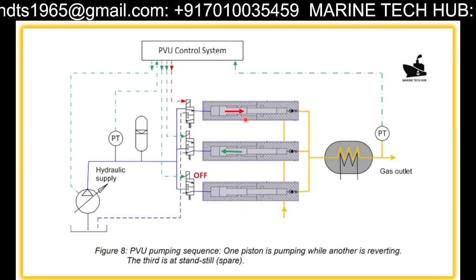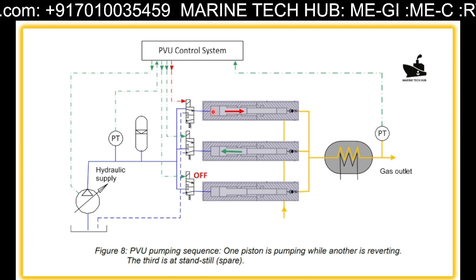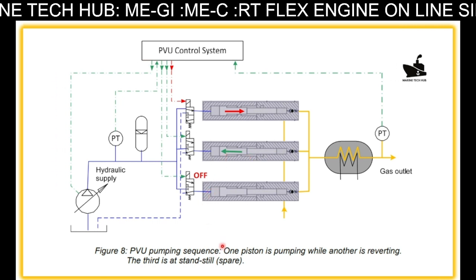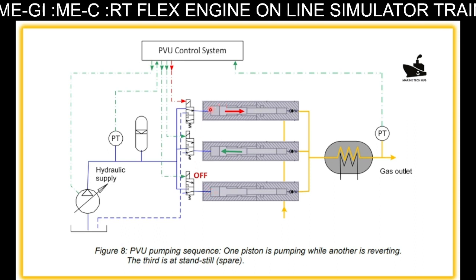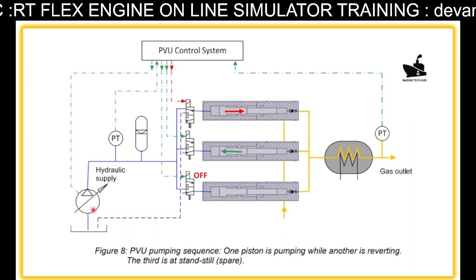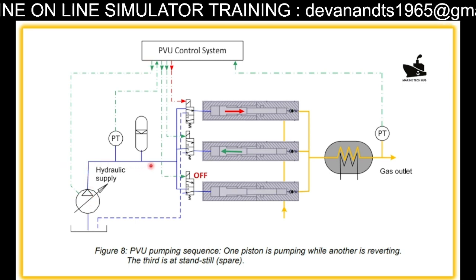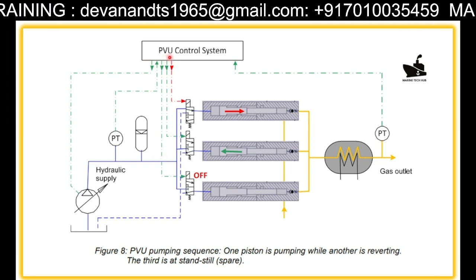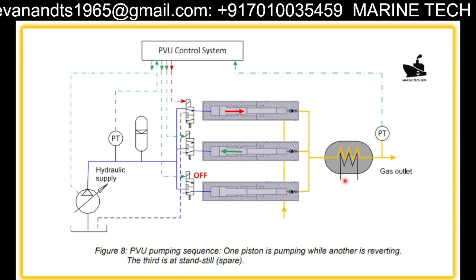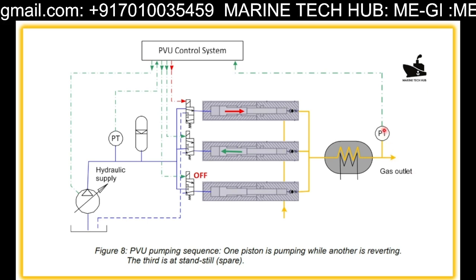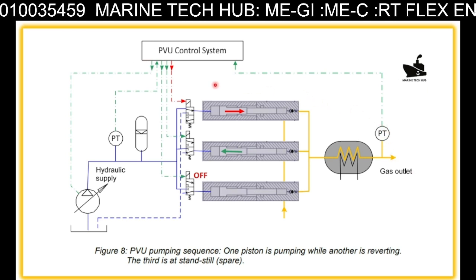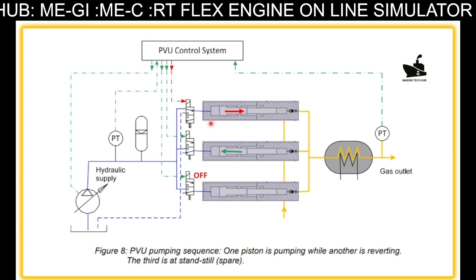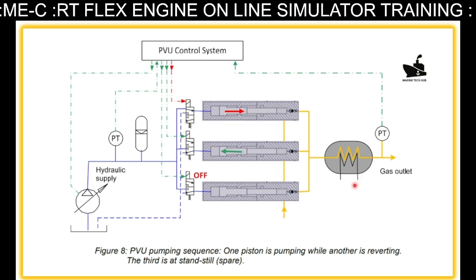Looking at the units here — one, two, and three — the first one is running, the second one is reverting, and the third is on standby. One will always be running and the second will be reverting. We have the hydraulic pump, supply, and an accumulator here, plus the PV unit control system. Once running, it is heated up through the heating system and the gas outlet is measured. This hydraulic actuator converts the liquid to vapor and we heat it up using glycol.